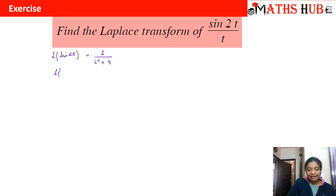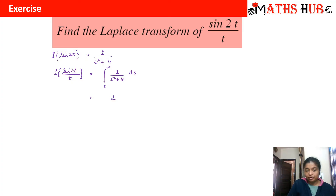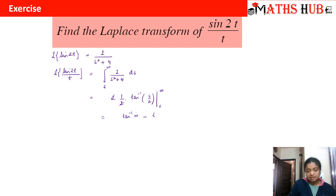In the second step, we divide sin(2t) by t. On the right hand side we get the integral from s to infinity of 2/(s² + 4) ds. The 2 is taken as a constant, giving 2·∫ds/(s² + 4). Writing 4 as 2², and using the formula ∫dx/(x² + a²) = (1/a)·tan⁻¹(x/a), we get 2·(1/2)·tan⁻¹(s/2) evaluated from s to infinity. The 2 cancels, giving tan⁻¹(∞) − tan⁻¹(s/2), which is π/2 − tan⁻¹(s/2), and that equals cot⁻¹(s/2). So the answer is cot⁻¹(s/2).